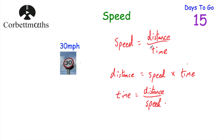And we've got some formulae with speed, distance and time. We've got speed is equal to distance divided by time. So for instance, if I travelled 90 miles in three hours, 90 divided by 3 is equal to 30, so my speed would be 30 miles per hour.